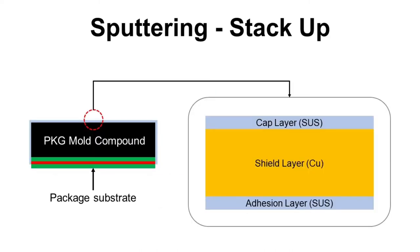For sputtering, the coating consists of three layers. From bottom: adhesion layer, shield layer, and cap layer. Ti/Cu/SUS is the most popular combination. The adhesion layer at the bottom is for good adhesion between the package mold compound and the shield layer. The shield layer in the middle is for EMI shield and uses copper. The cap layer at the top is to protect copper from corrosion with oxygen.